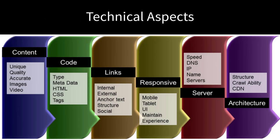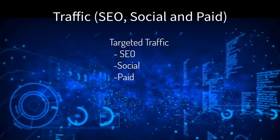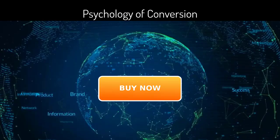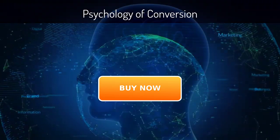Of course, all online marketing must have three elements in alignment: the technical aspects — servers, layout, code structure; the traffic — SEO, social, and paid; and the psychology of conversions.